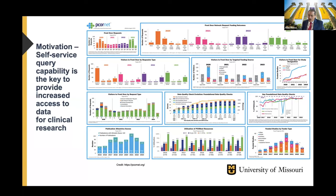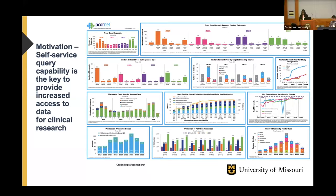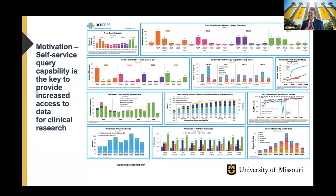From that perspective, common data models are in a much better position. We heard about the OMOP common data model. There is another common data model, the PCORnet common data model, which is funded by the Patient-Centered Outcomes Research Institution. We realized and identified that self-service query capability is the key to provide increased access to data for clinical research. And if it is instantaneous access at any time, that is much better. So the I2B2 software application comes into discussion from this perspective.